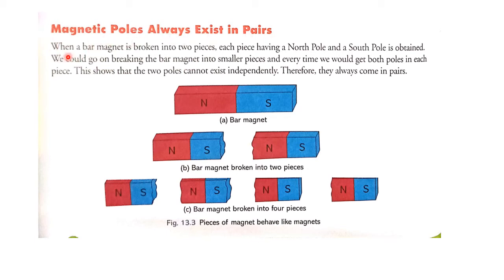Magnetic poles always exist in pairs. When a bar magnet is broken into two pieces, each piece obtains both a North Pole and a South Pole.